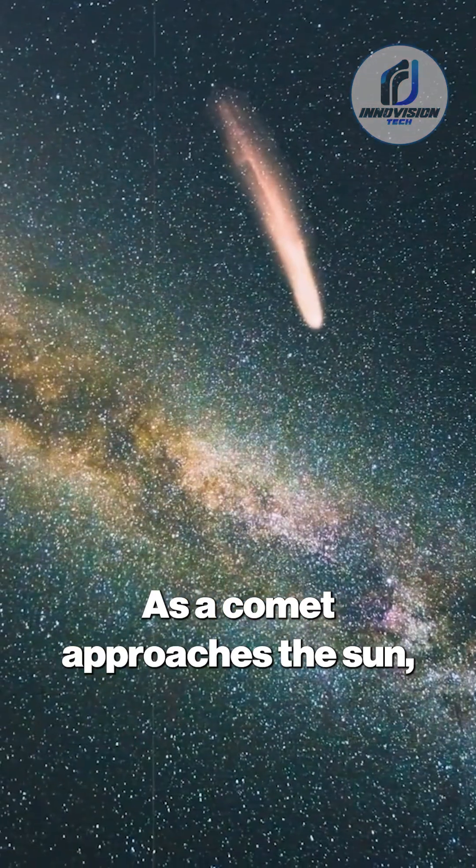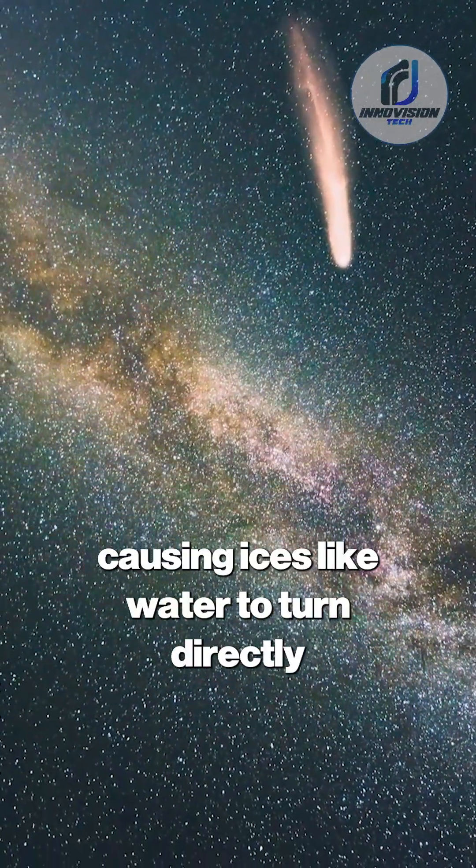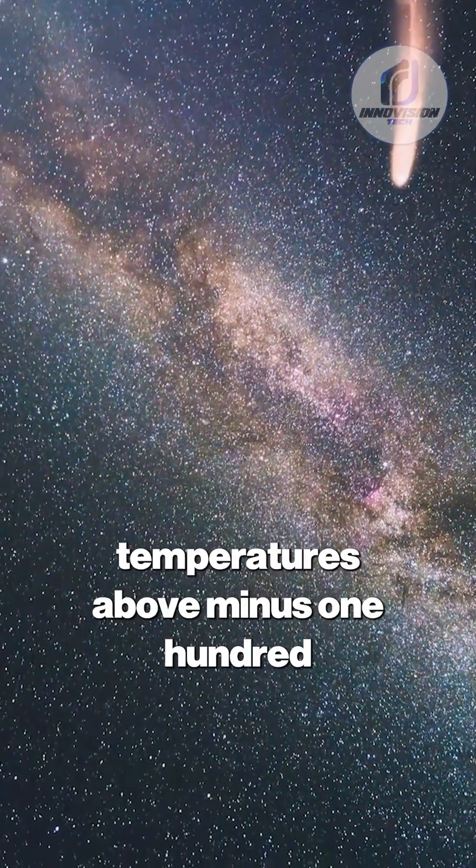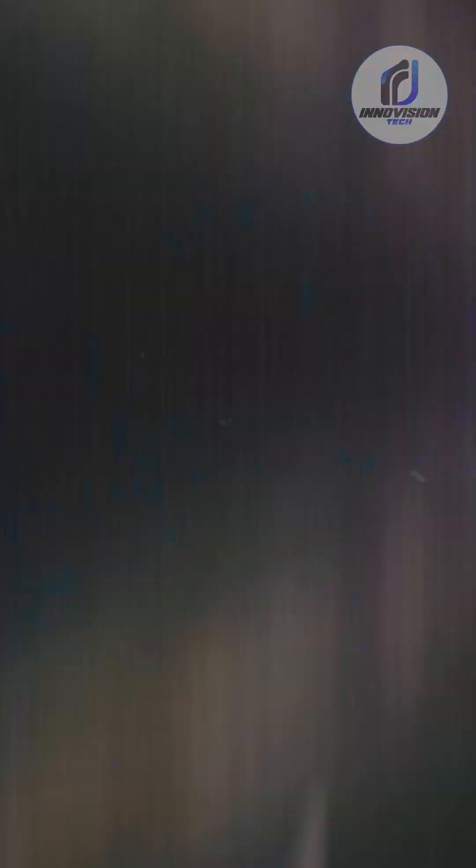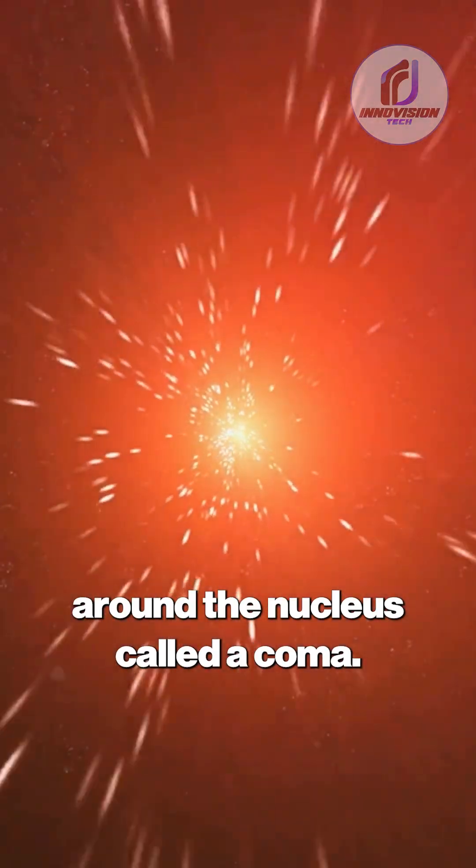As a comet approaches the sun, solar radiation heats its surface, causing ices like water to turn directly into gas, a process called sublimation, at temperatures above minus 100 degrees Fahrenheit. This process creates a glowing atmosphere around the nucleus called a coma.